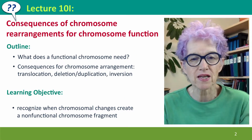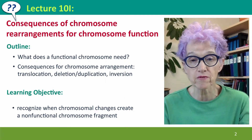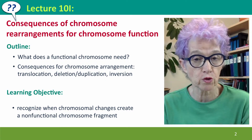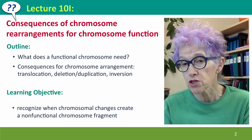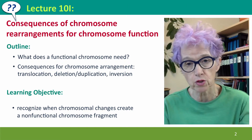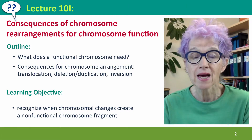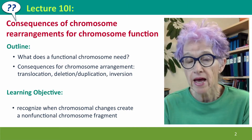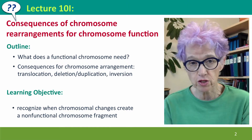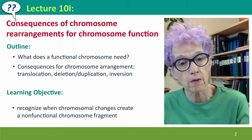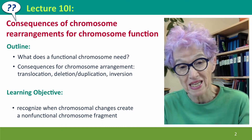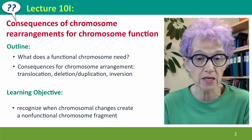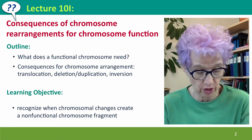Hi everyone. Welcome back to lecture 10i of Useful Genetics, where we're going to think about the consequences of chromosome rearrangements. In this lecture, the consequences for chromosome function, and in the next lecture, the consequences for producing gametes and for the functions of genes. So we'll talk about what a functional chromosome needs, and how these needs are affected by chromosome rearrangements of different kinds.